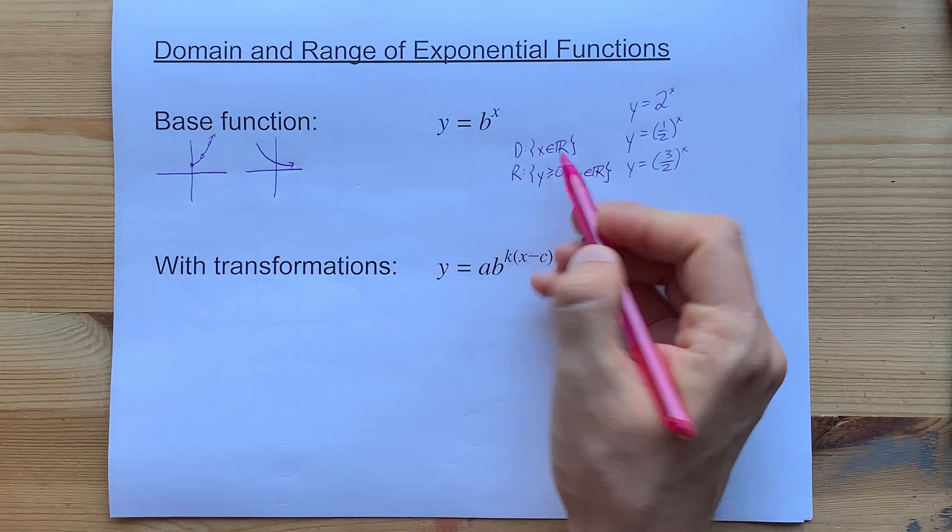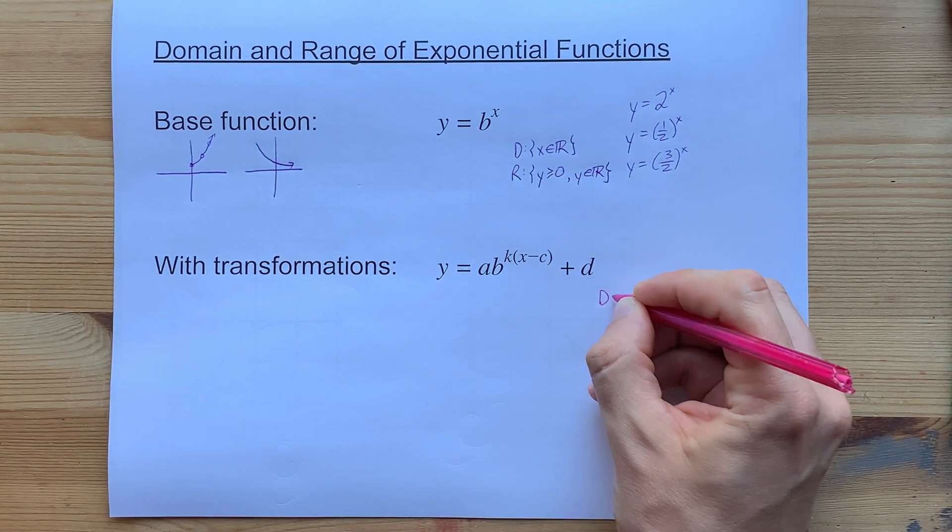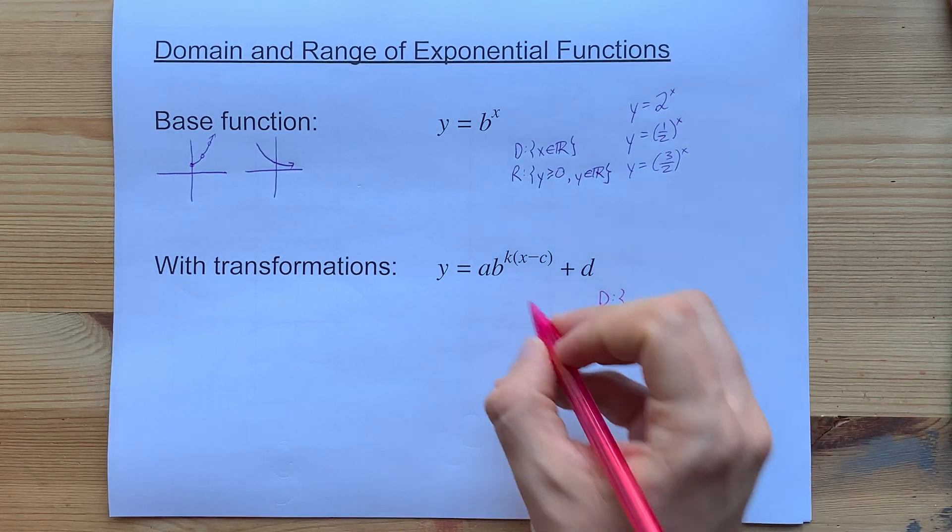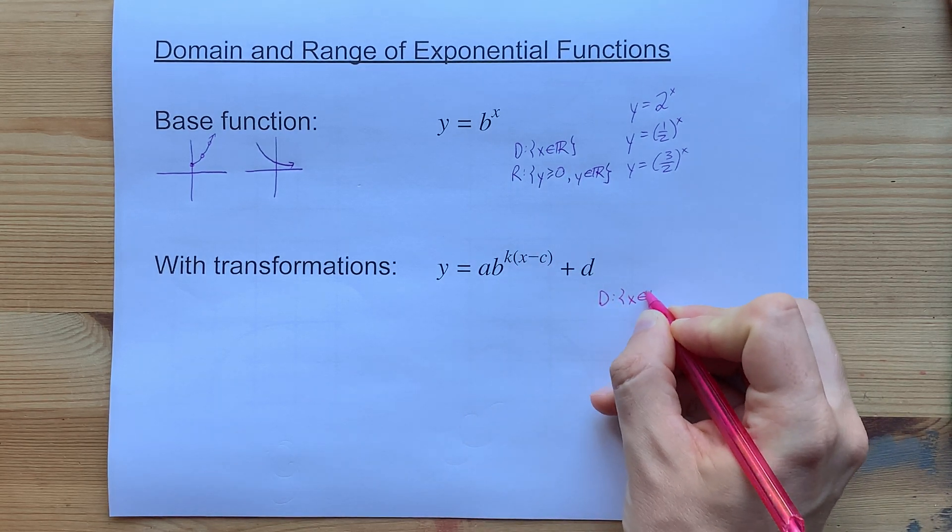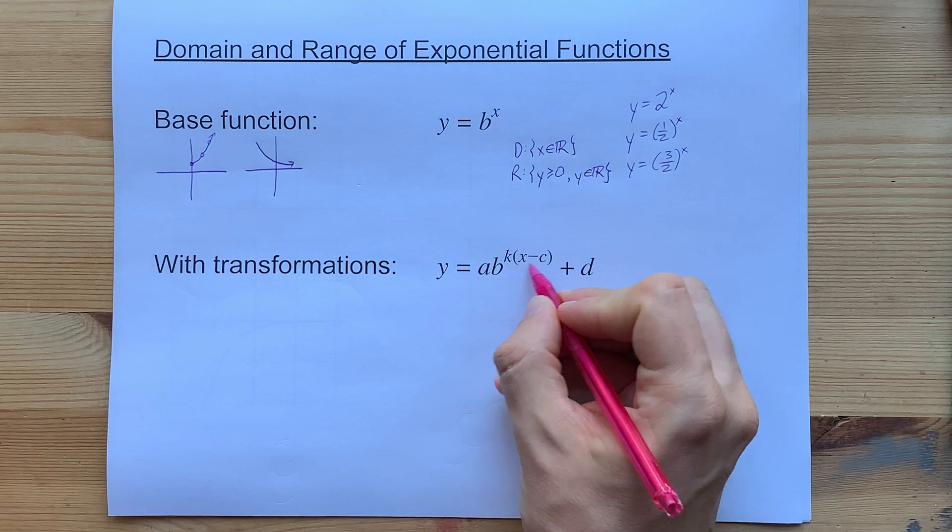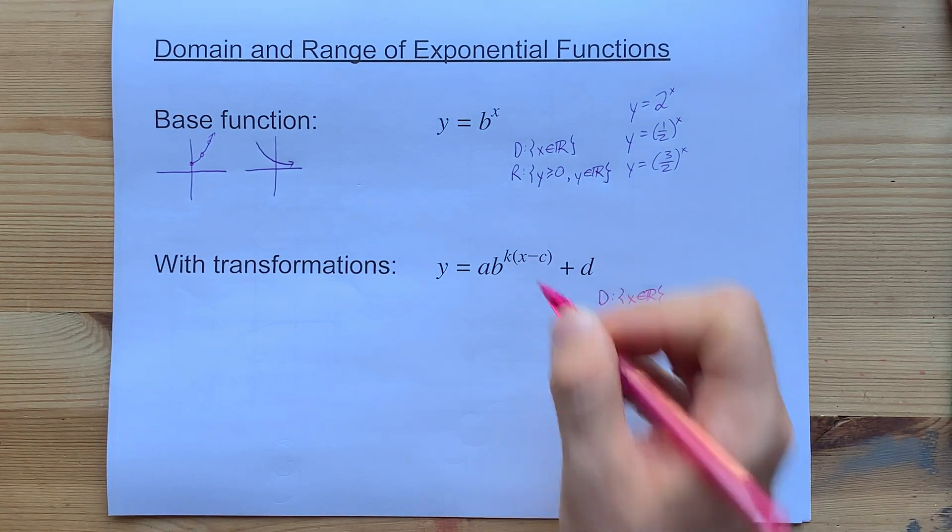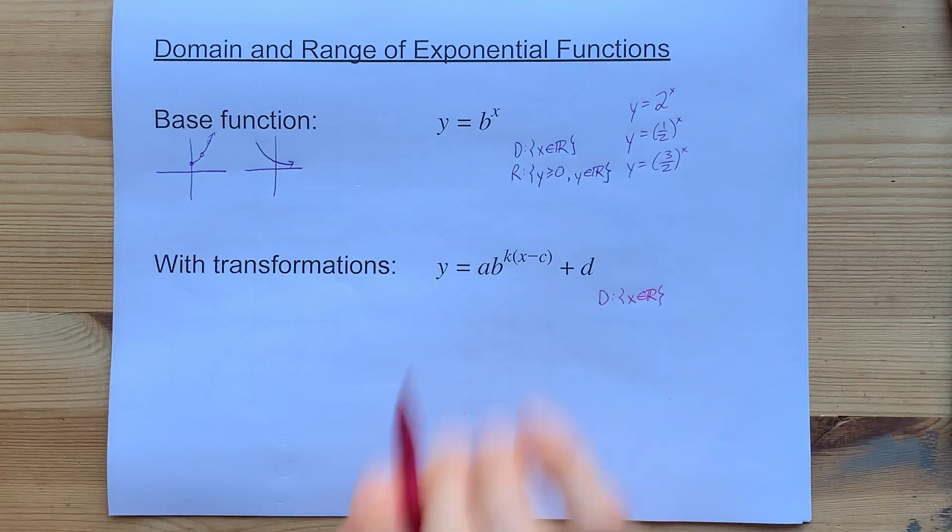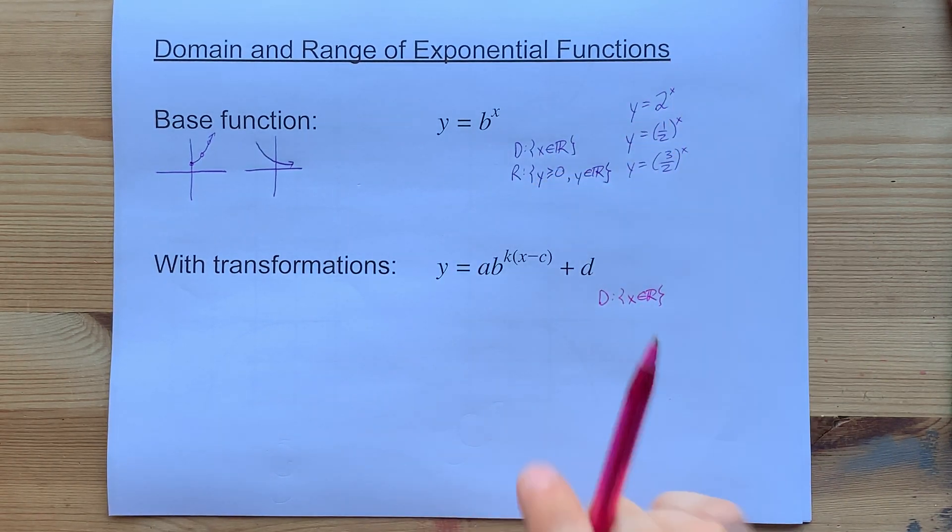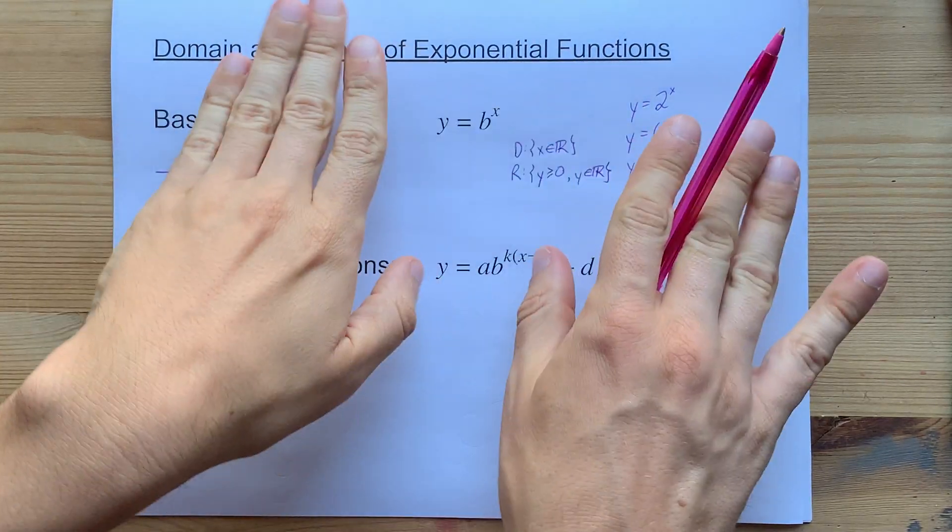you're going to change these. Now, the domain actually will always stay the same. You can still raise anything to the power of x, no matter what you might be doing to that x before you actually make it a power. The domain of every exponential function is x∈R. Done. We're going to do 24 examples. That's going to be the domain every time.